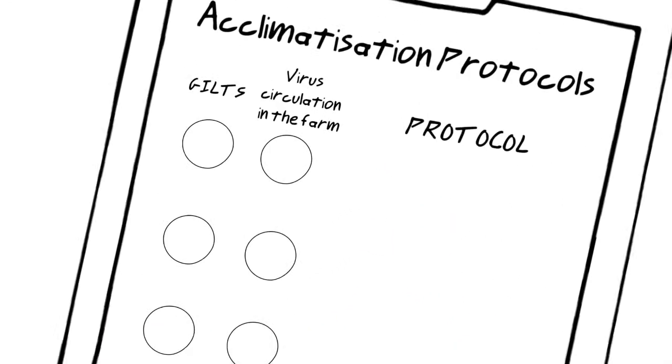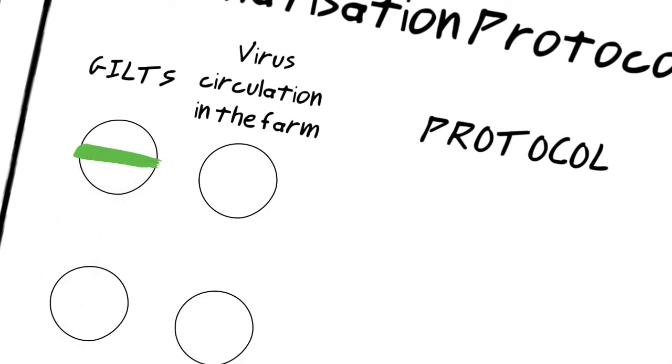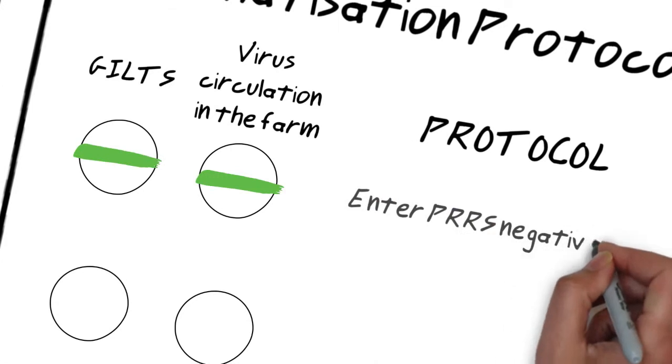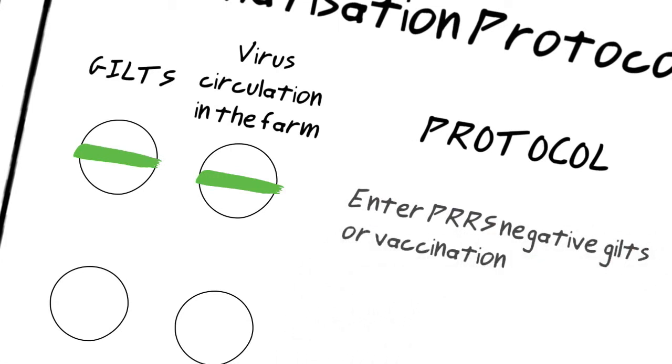If gilts arrive to the farm PERS negative without any previous contact to the virus, and at the farm of destination the virus is not circulating, we have to vaccinate gilts if the farm is serological positive. If the farm is serological negative, we have just to keep those gilts negative without vaccination.